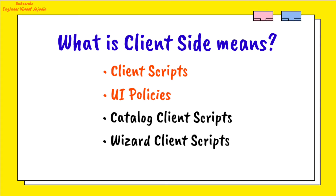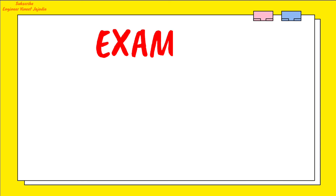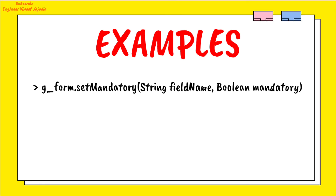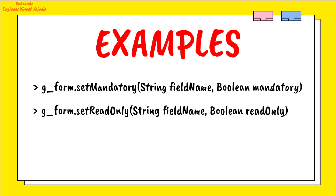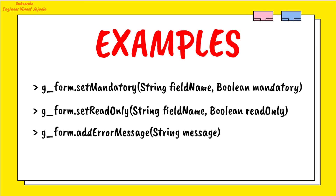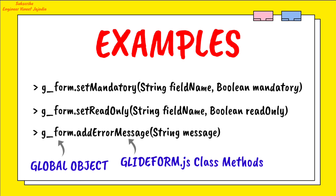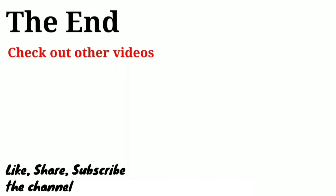There are some examples of how we can use the g_form global object shown on the screen. For example, we can use g_form.setMandatory to set a field as mandatory, g_form.setReadOnly to make a field read only, and g_form.addErrorMessage to add an error message on the form. These are some examples of how we use the g_form global object to access GlideForm class methods.